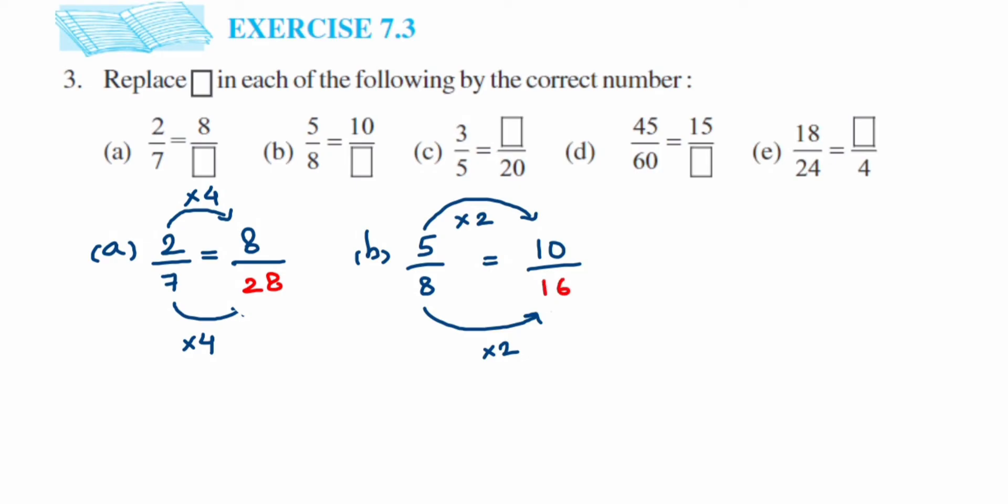In the third one we have 3 by 5 is equal to dash upon 20. Now the denominator we have given. From 5 how we got 20, by multiplying it with 4. So same number you have to multiply in the numerator with 3, so 3 times 4 is 12. The answer will be 12 for the third one.